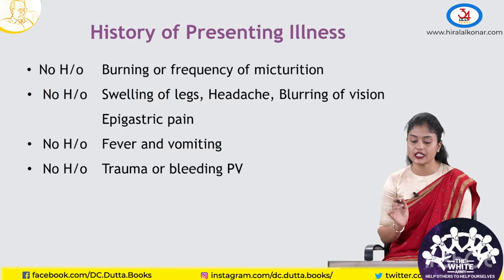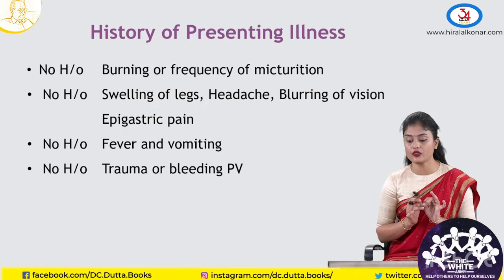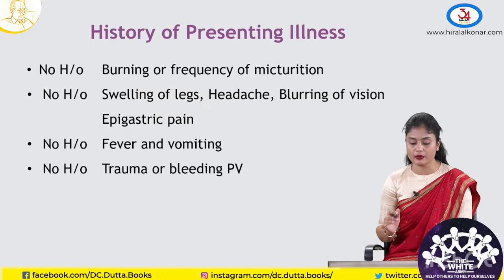No history of burning micturition or increased frequency of micturition was asked to rule out urinary tract infections causing pain abdomen. No history of swelling in the legs, headache, blurring of vision, or epigastric pain and vomiting — asked to rule out hypertensive disorders and associated abruption. No history of fever and vomiting to rule out acute GI causes. No history of trauma or bleeding per vagina was asked if these were the cause for pain abdomen.